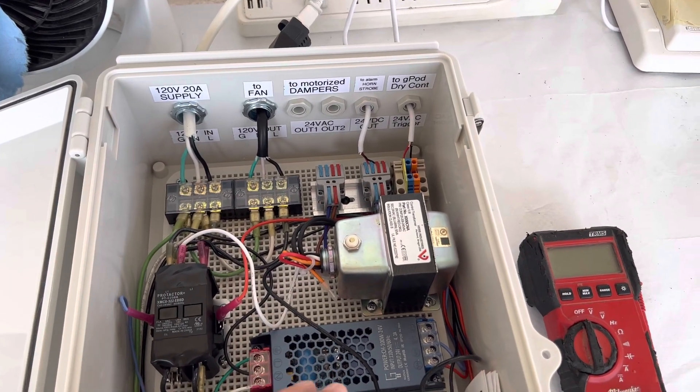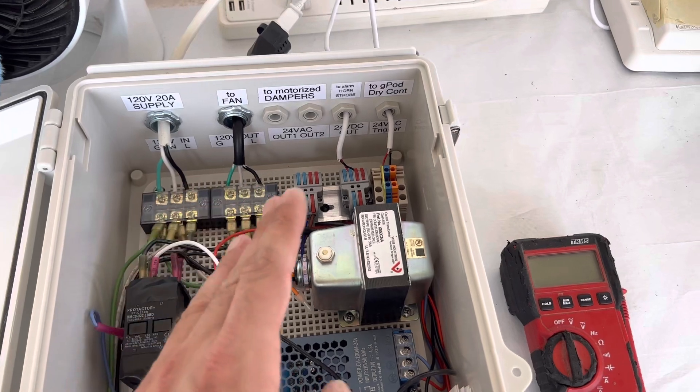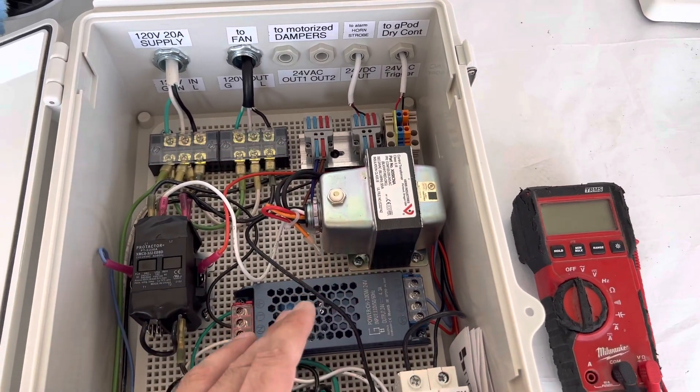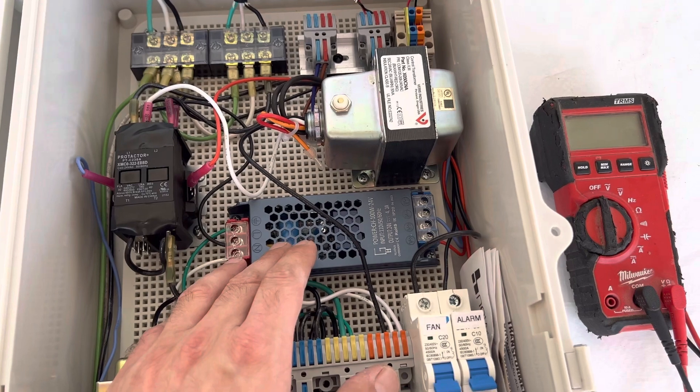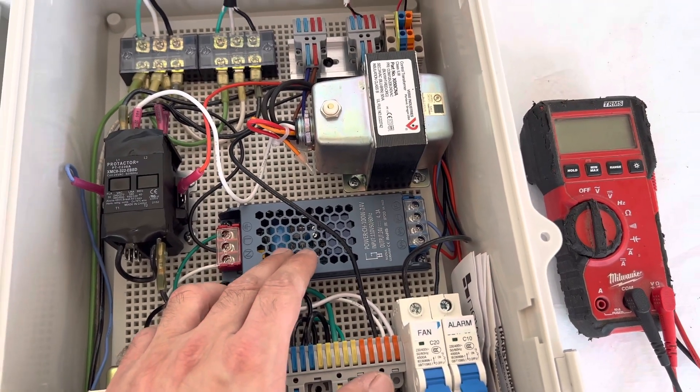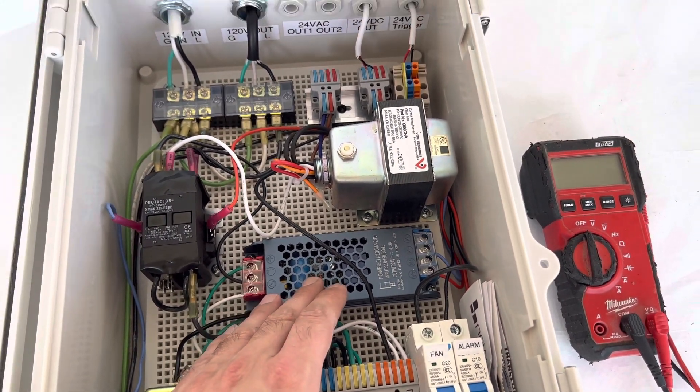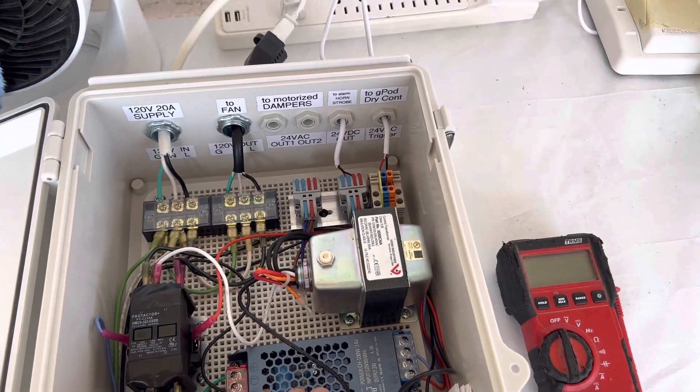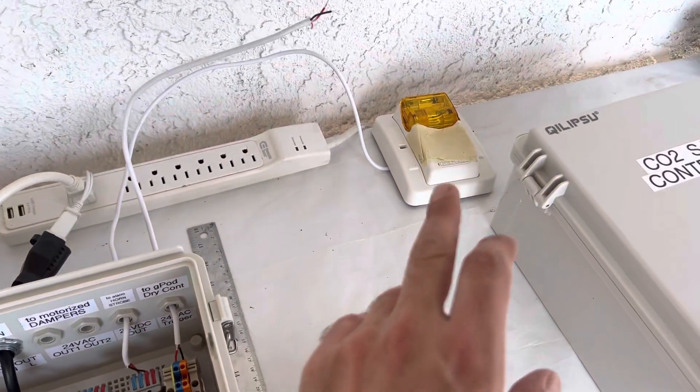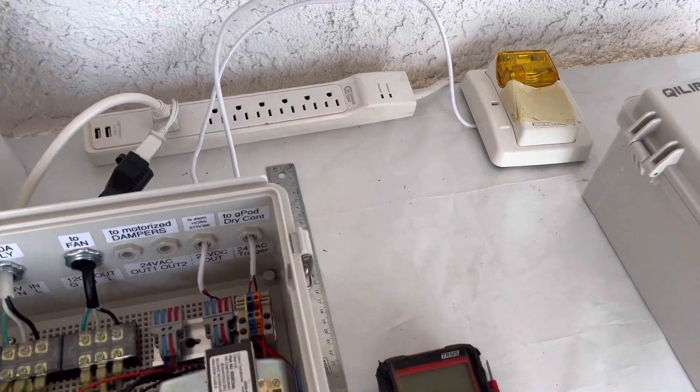There's also a power supply, 24 volt DC, right here. It's 100 watts, so what it does is it feeds the alarm horn and strobe.